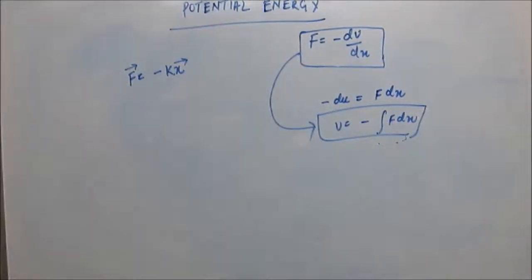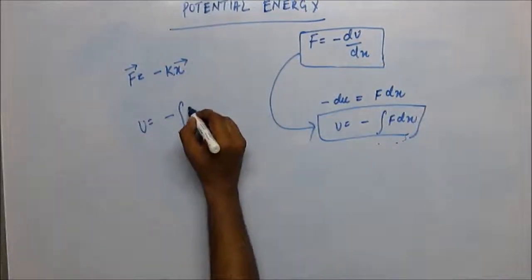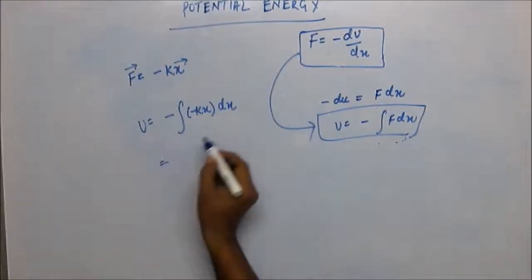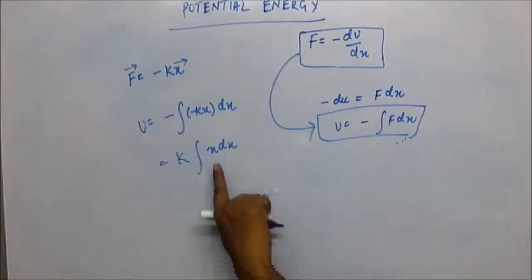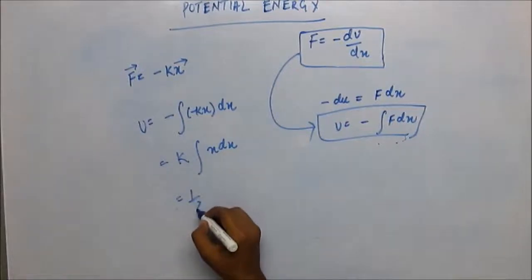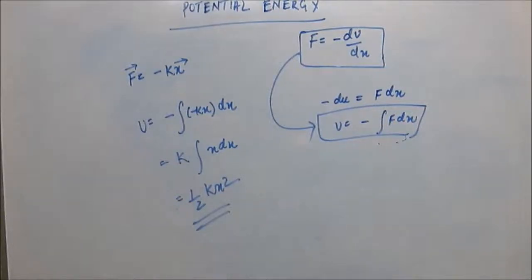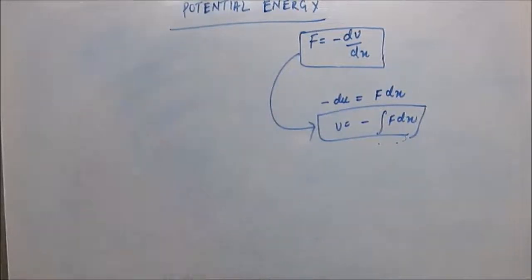Now we can find the potential energy stored in the spring using this equation. Potential energy U = −integral of F·dx = −integral of (−kx)dx. The minus k becomes plus k, and integrating x gives x²/2, so U = ½kx² — which we all know is the energy stored in the spring.